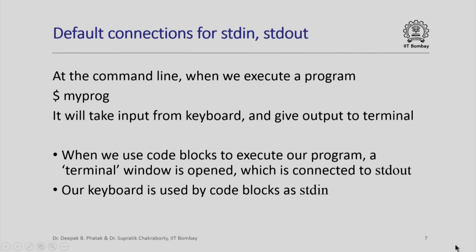The default connections for stdin and stdout are automatically invoked even when we execute a program from a command line. For example, if we say myprog at the command line, it will take input from keyboard and give output to the terminal. When we use Code Blocks to execute our program, a terminal window is opened which is connected to stdout, and our keyboard is used by Code Blocks as stdin.